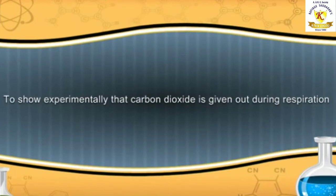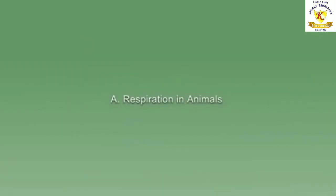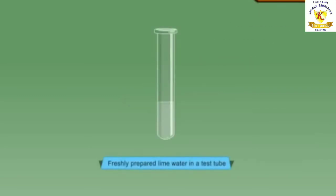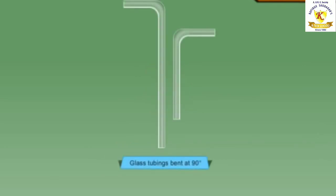Now we will see an experiment that carbon dioxide is given out during respiration. Let's see respiration in animals or human beings. The materials required are fresh air, freshly prepared lime water in a test tube, cork with two holes, glass tubing bent at 90 degrees. Let's see the procedure.